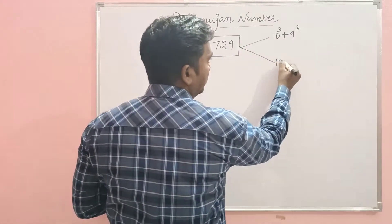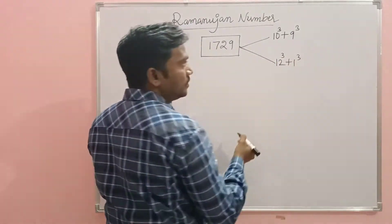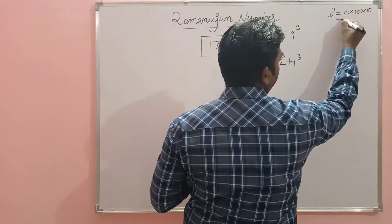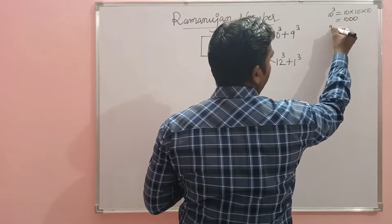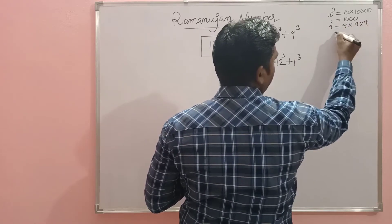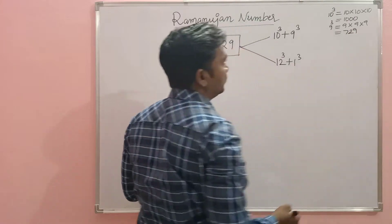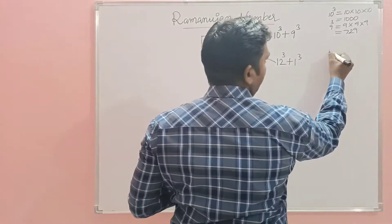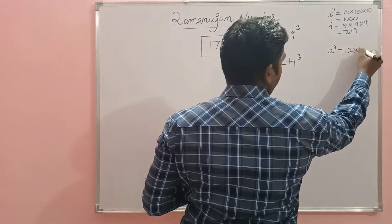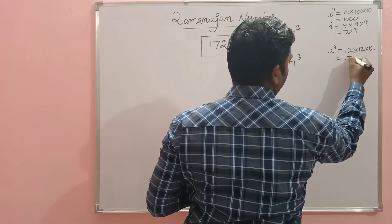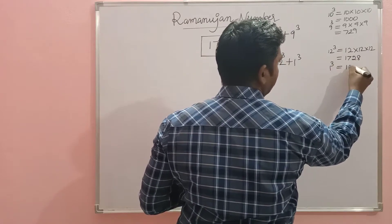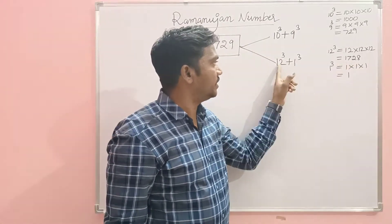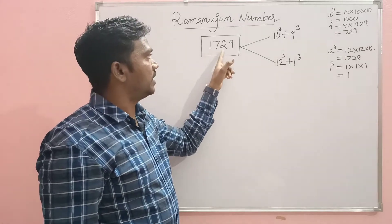10 cube is 10 × 10 × 10 = 1000. 9 cube is 9 × 9 × 9 = 729. So 1000 + 729 = 1729. 12 cube is 12 × 12 × 12 = 1728. 1 cube is 1 × 1 × 1 = 1. So 1728 + 1 = 1729.